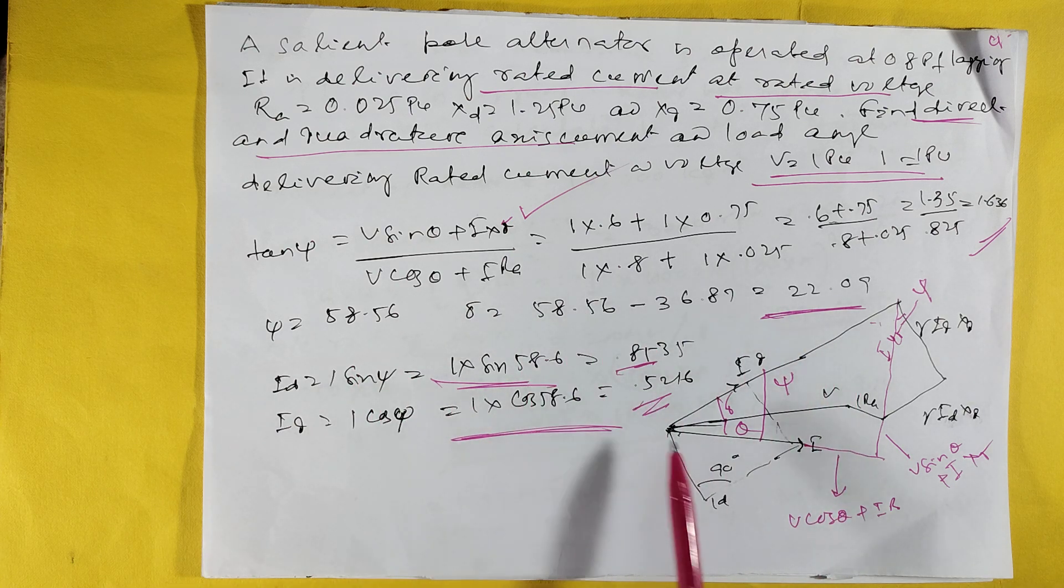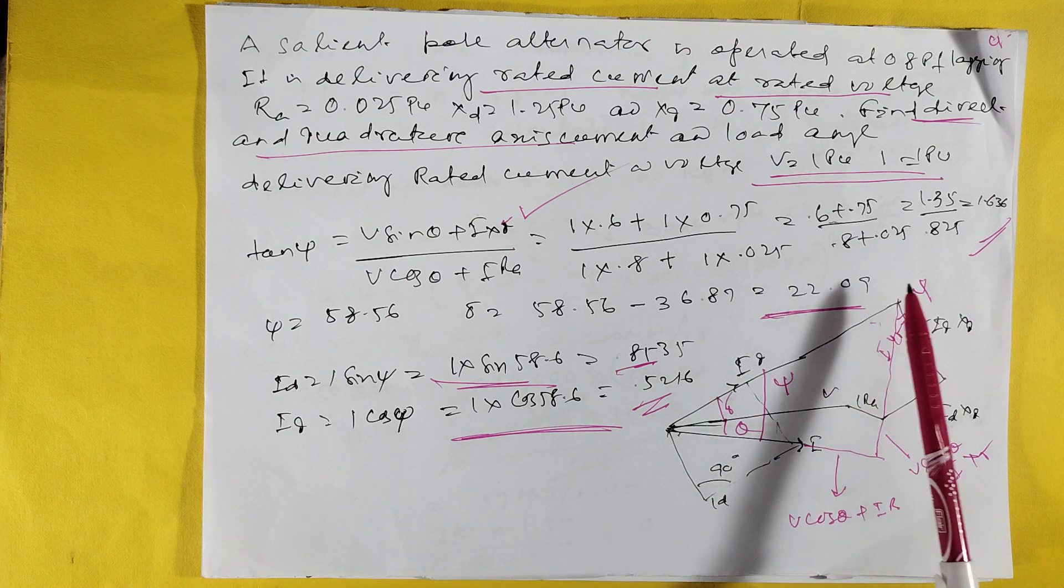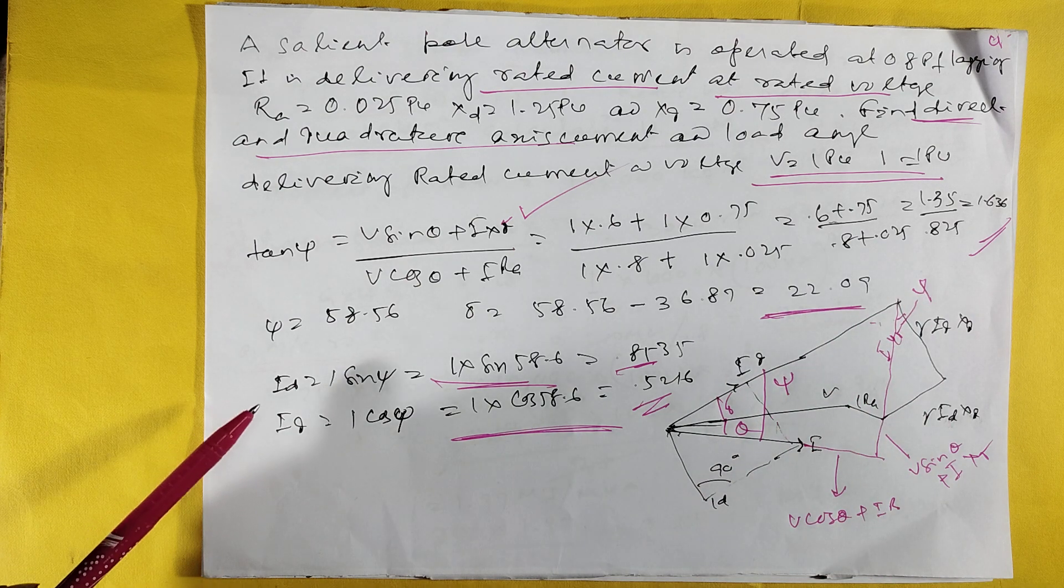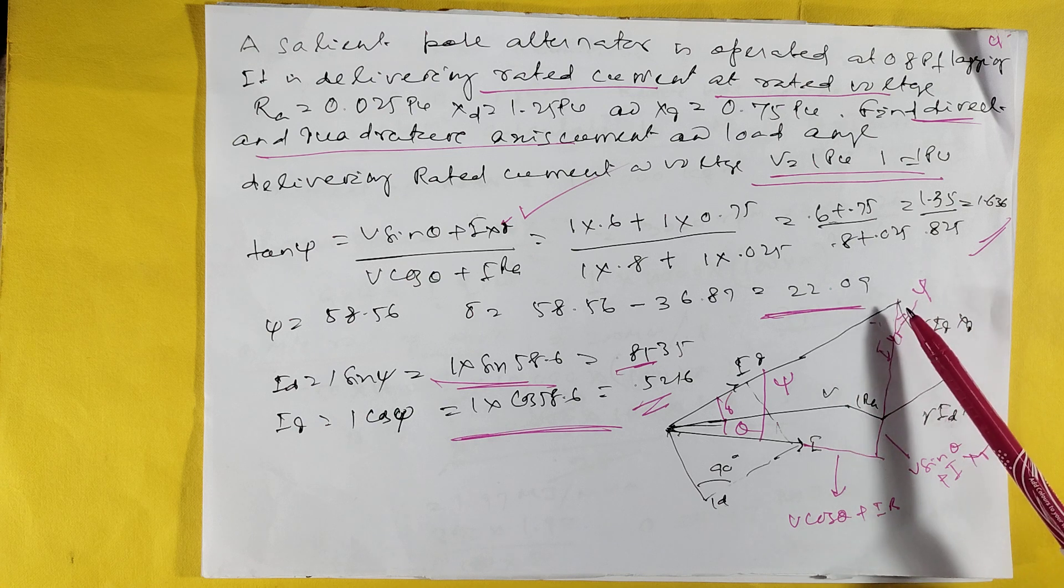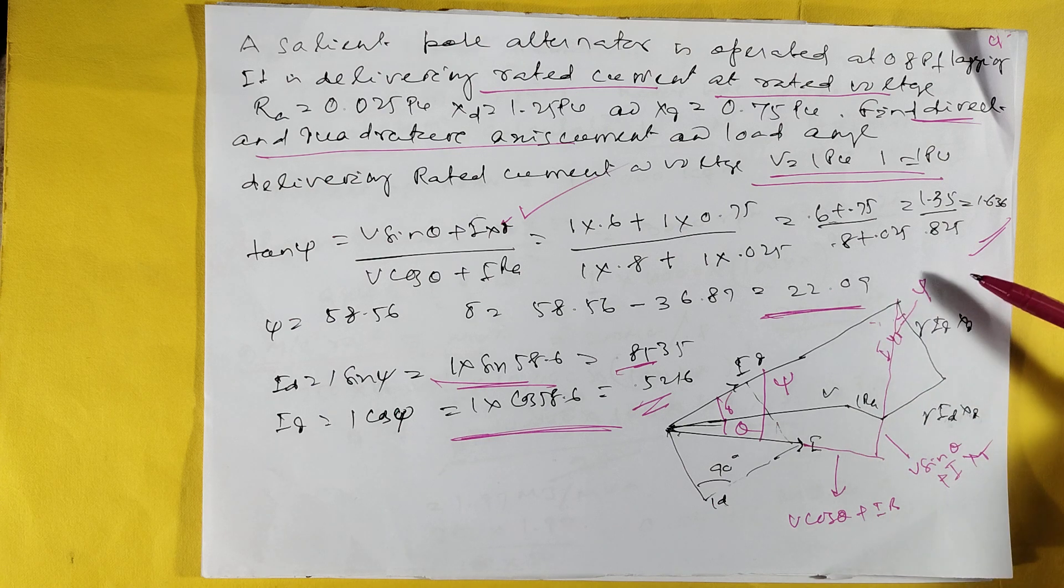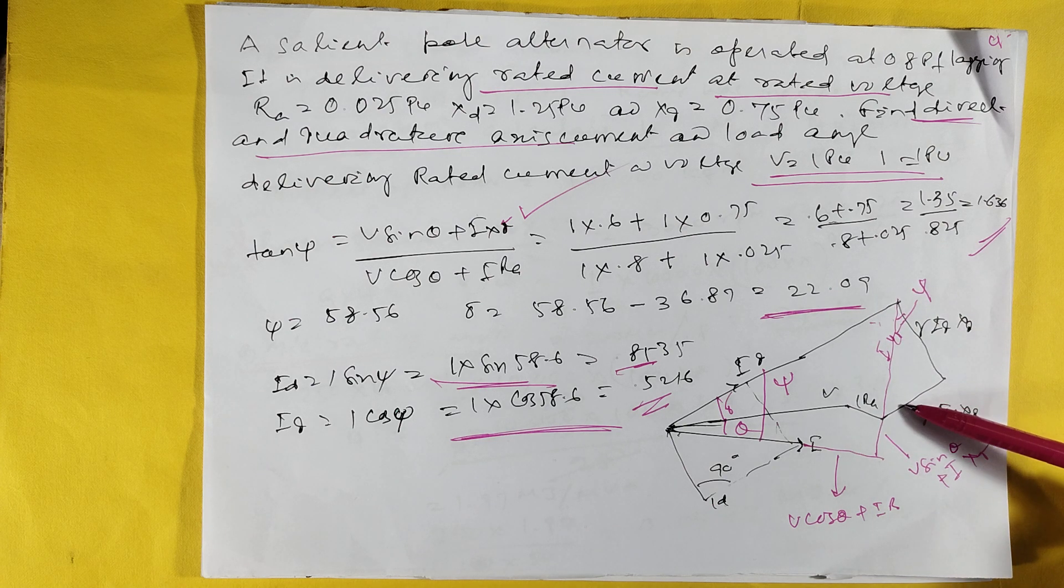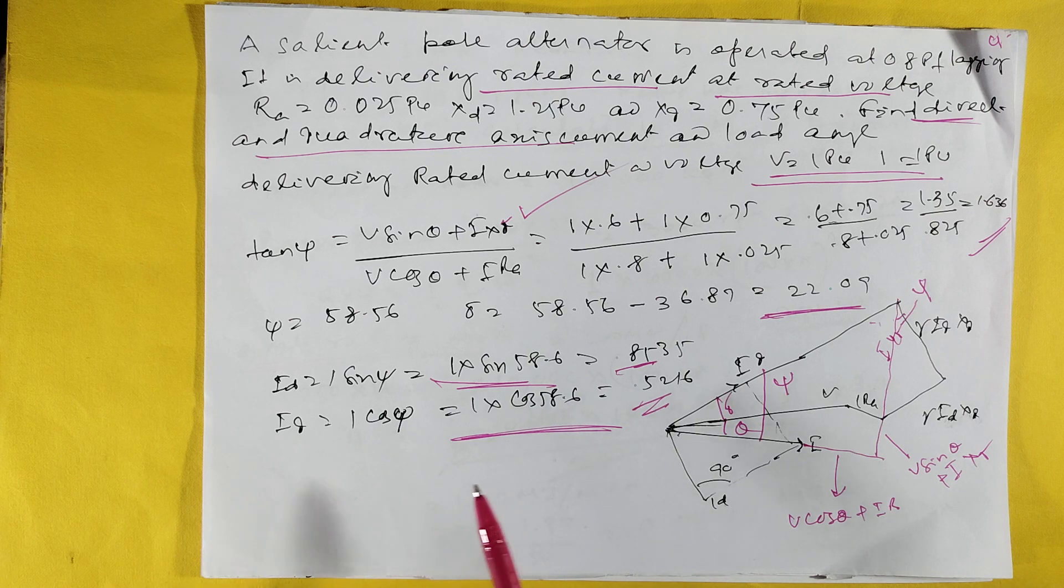The angle δ between V and Em is coming to 22.09°. I is at angle φ. Id is coming to 0.8535 per unit, Iq is coming to 0.5217 per unit.